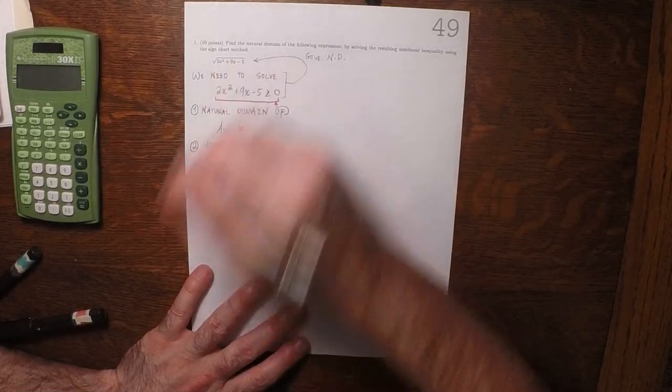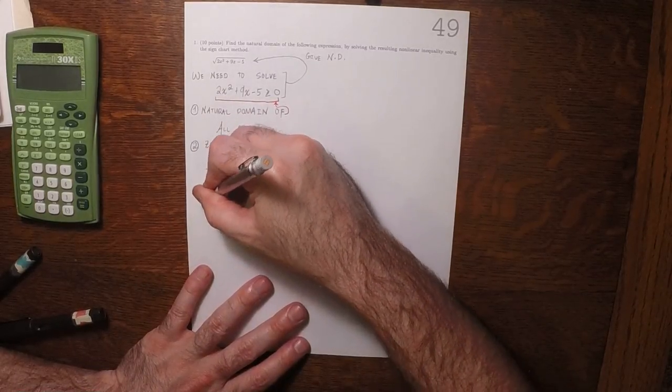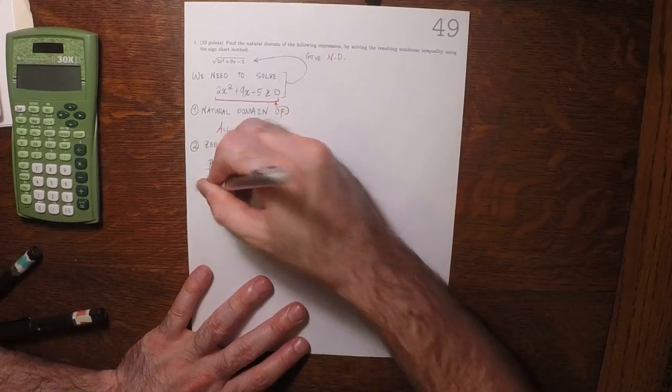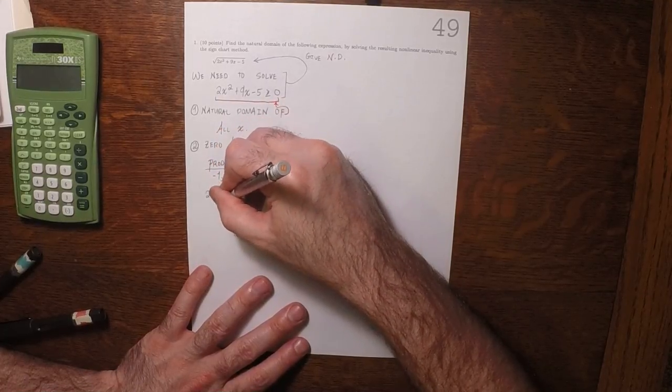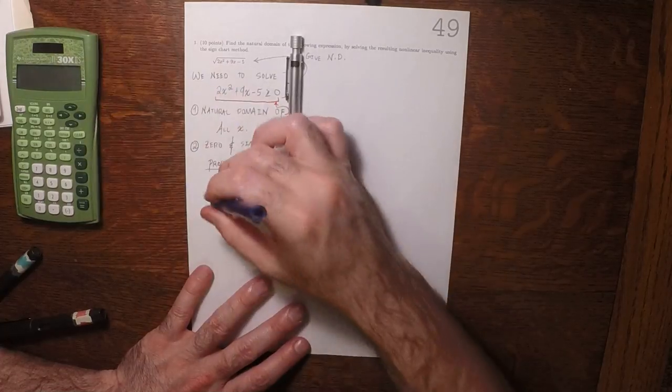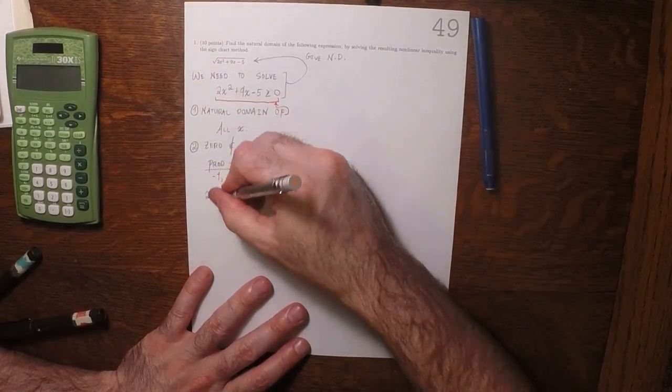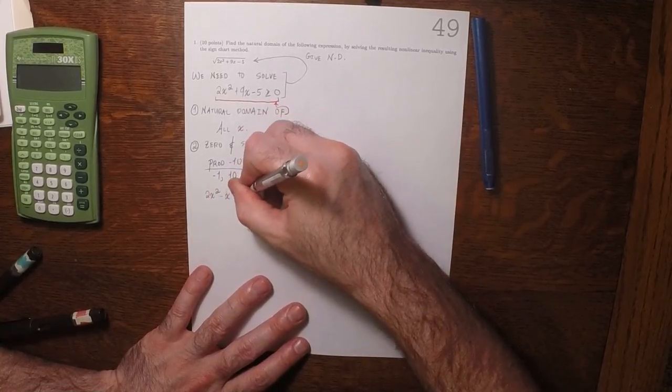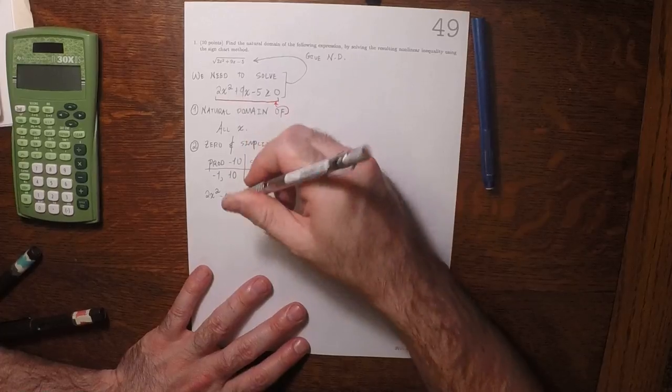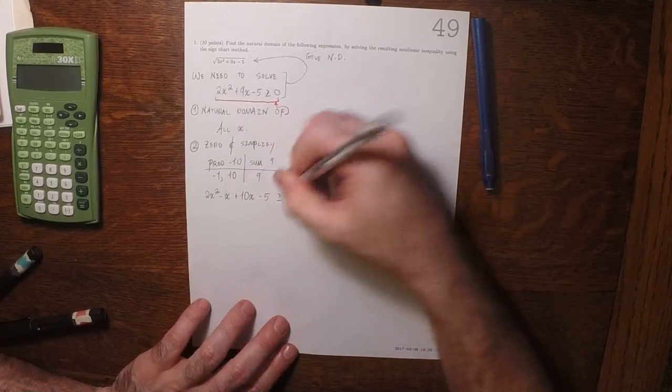So that means we can take that inequality and write 2x squared minus x and then plus 10x minus 5 is greater or equal to 0.